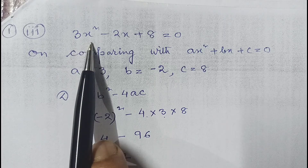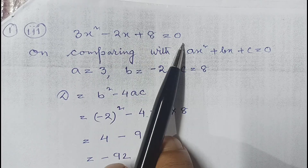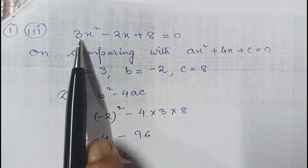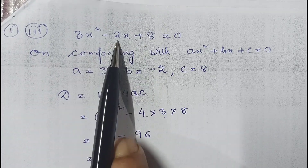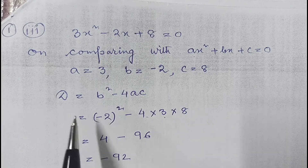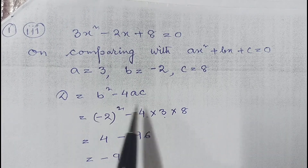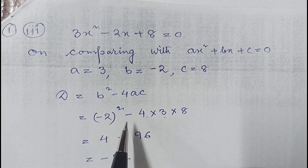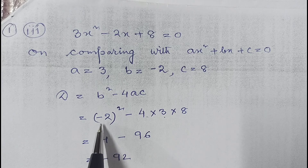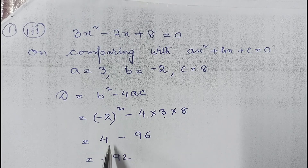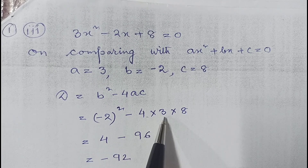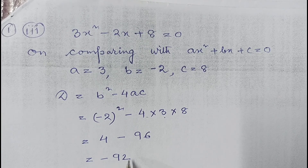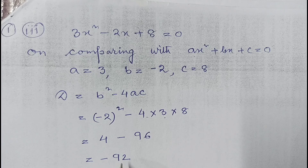The third part of question 1 is 3x² − 2x + 8 = 0. Comparing with ax² + bx + c = 0, a = 3, b = −2, c = 8. Discriminant = b² − 4ac = (−2)² − 4(3)(8) = 4 − 96 = −92. Therefore the discriminant is −92.